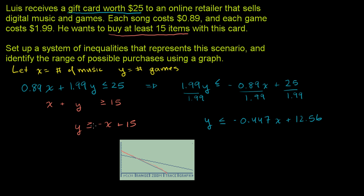This blue line is the other equation, y ≤ -0.447x + 12.56. It has a slope less negative than 1, so it's less downward sloping. That's because it's negative 0.44 as opposed to negative 1. It has a lower y-intercept. And we want all the values below it or equal to that line.